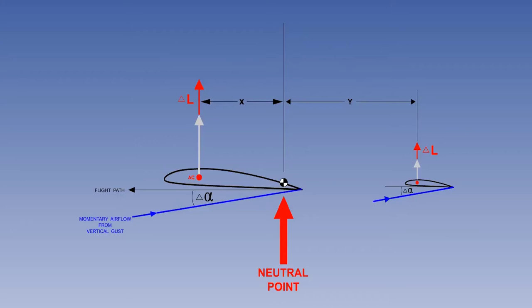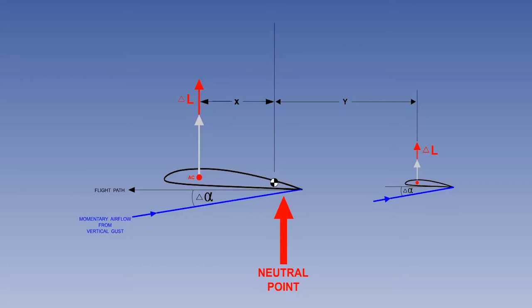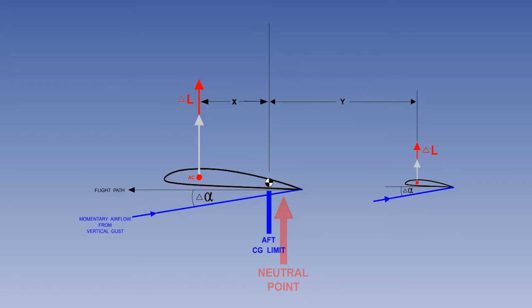Having returned the CG to the neutral point, we will now consider the acceptable CG range. Moving the CG slightly forward of the neutral point gives a small amount of longitudinal static stability, but still an insufficient margin of safety. With further forward movement, eventually a CG position is reached when the minimum acceptable longitudinal static stability exists. This position is known as the aft CG limit. Operationally, the CG must never move outside the aft CG limit at any time during the flight.